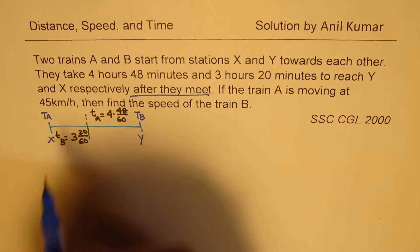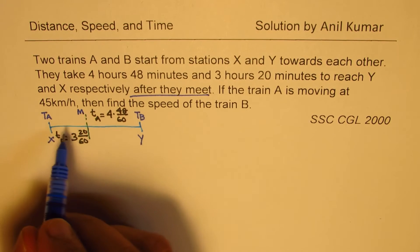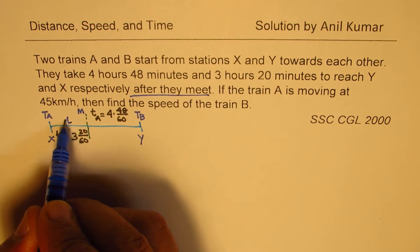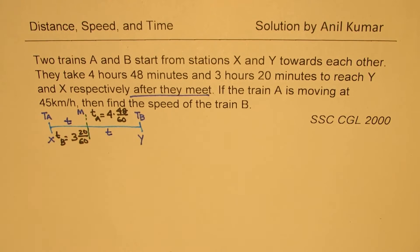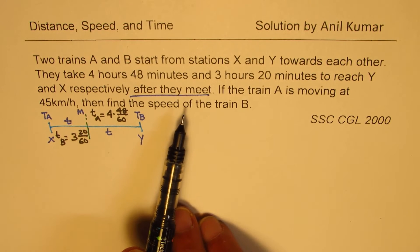Now when they meet at this point, let's call this point M. Both have traveled for the same time. Time is T for both the trains. This will help us understand the situation and derive a particular formula which we can use in many such questions as a shortcut method.